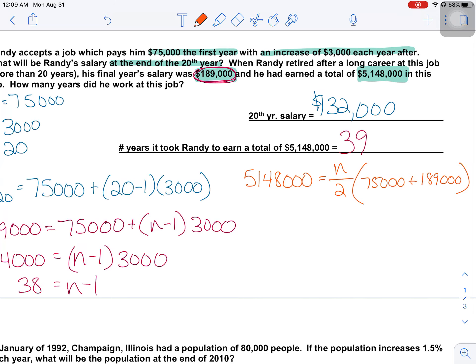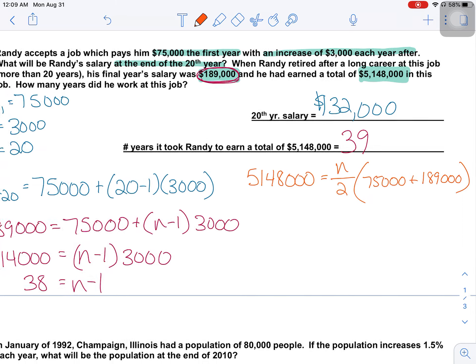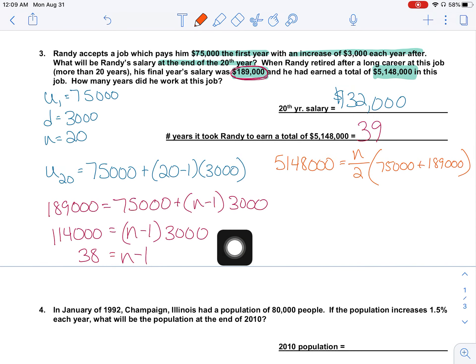So either way you do this, whether you do this work in red, you're going to get 39. If you do this work in orange, you're going to get 39. Do I care which? No. I'm going to be looking that he worked there for 39 years.